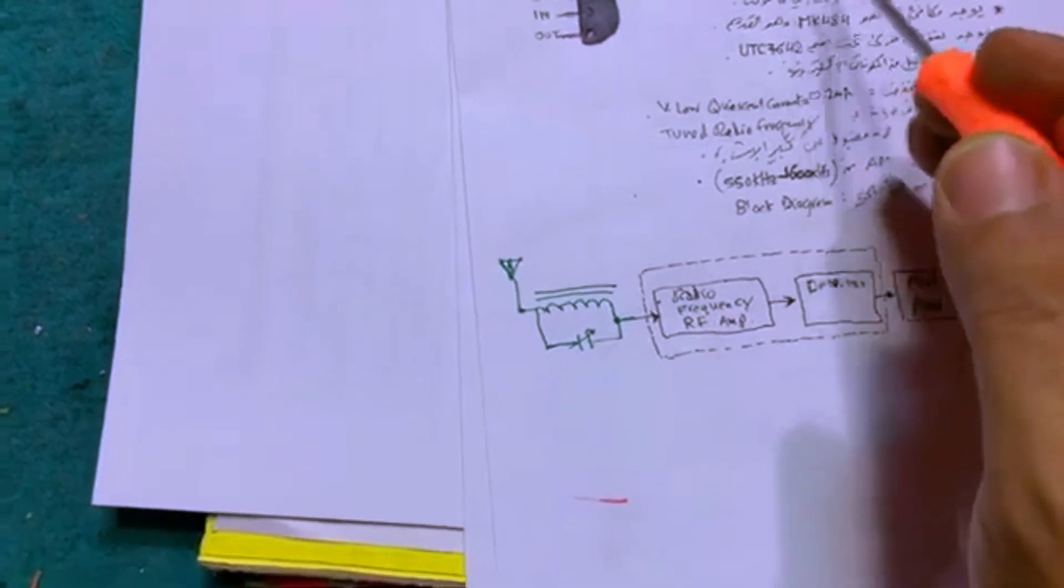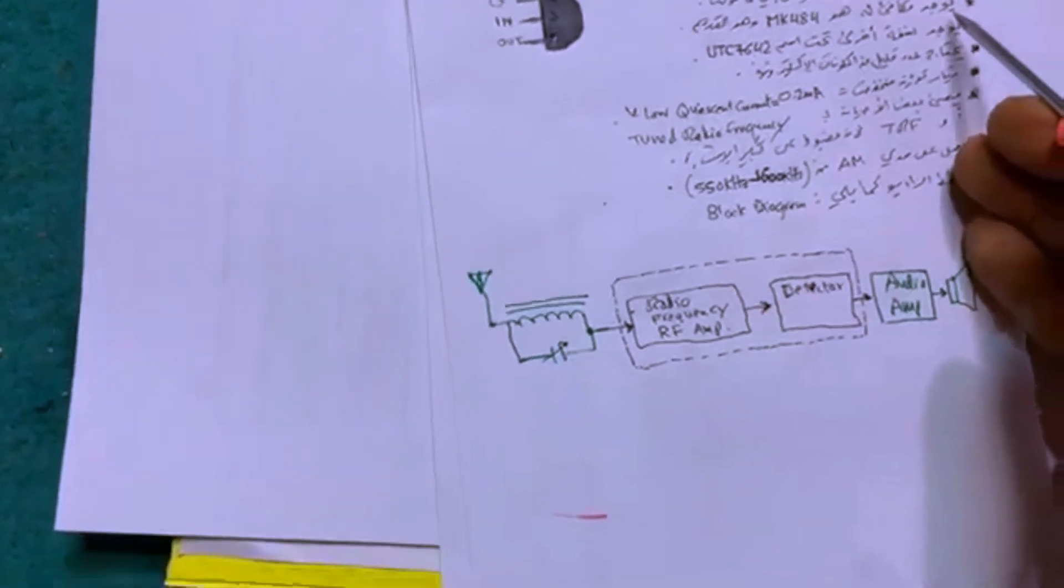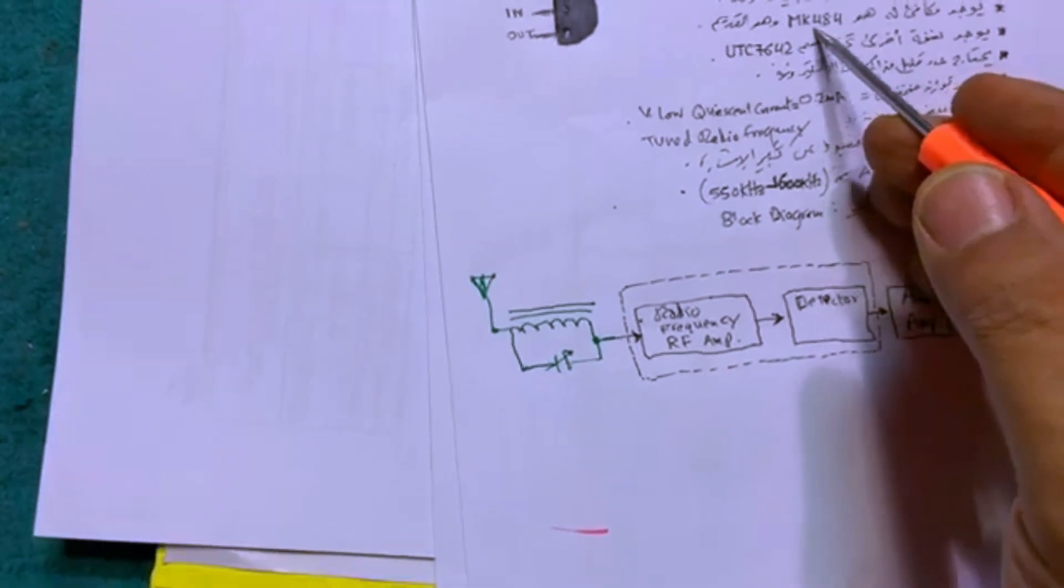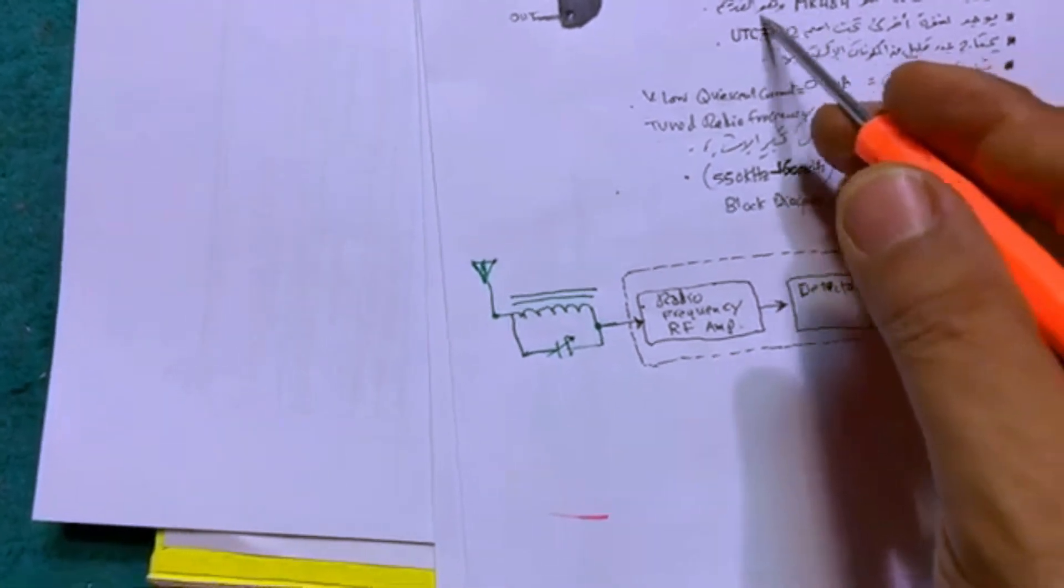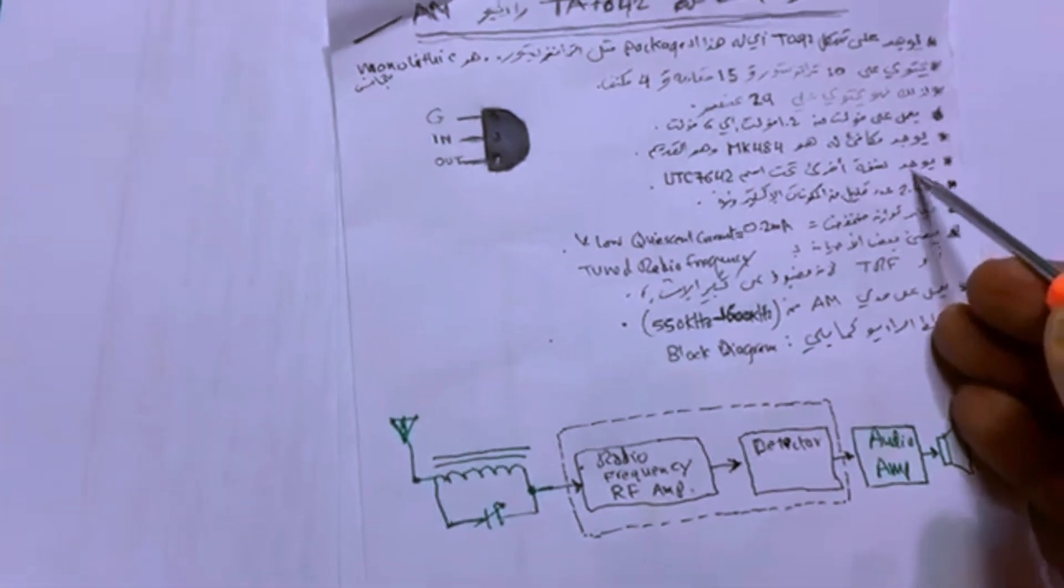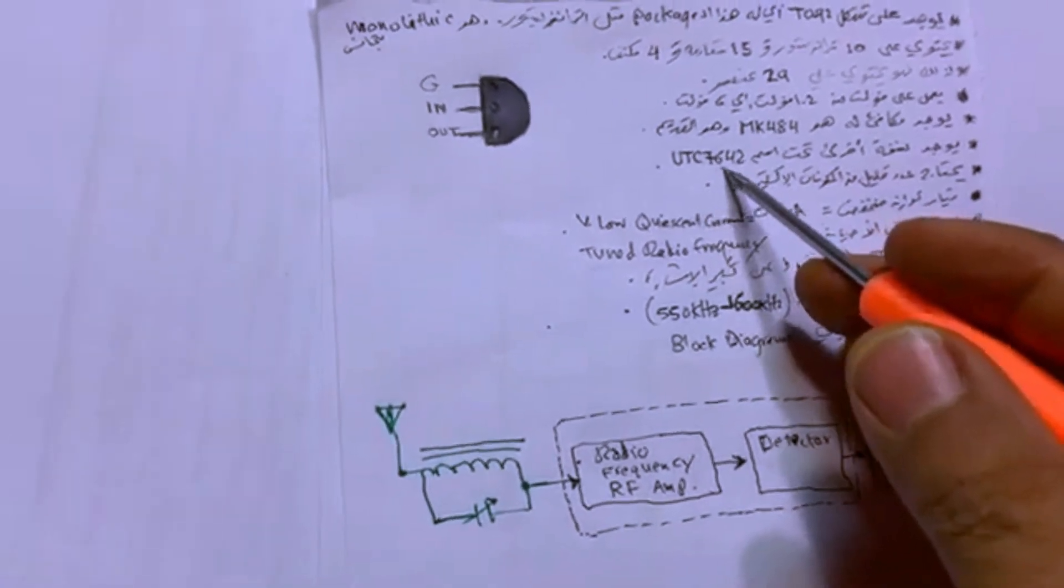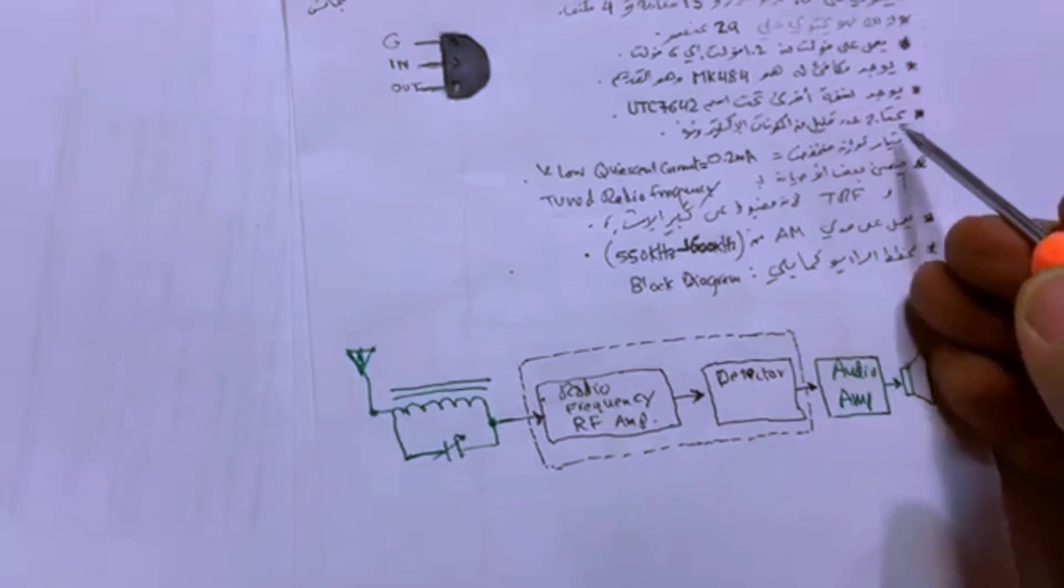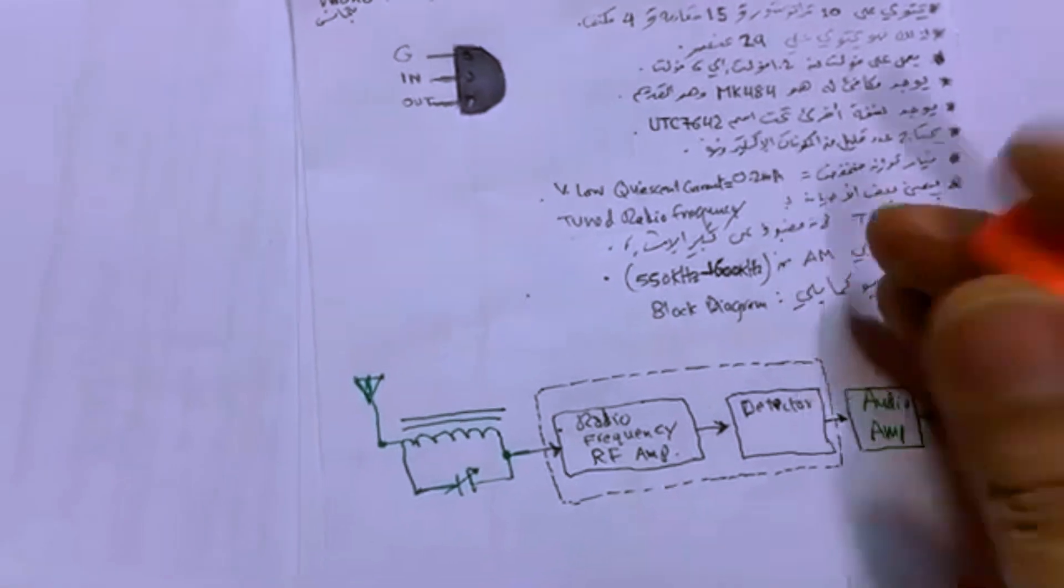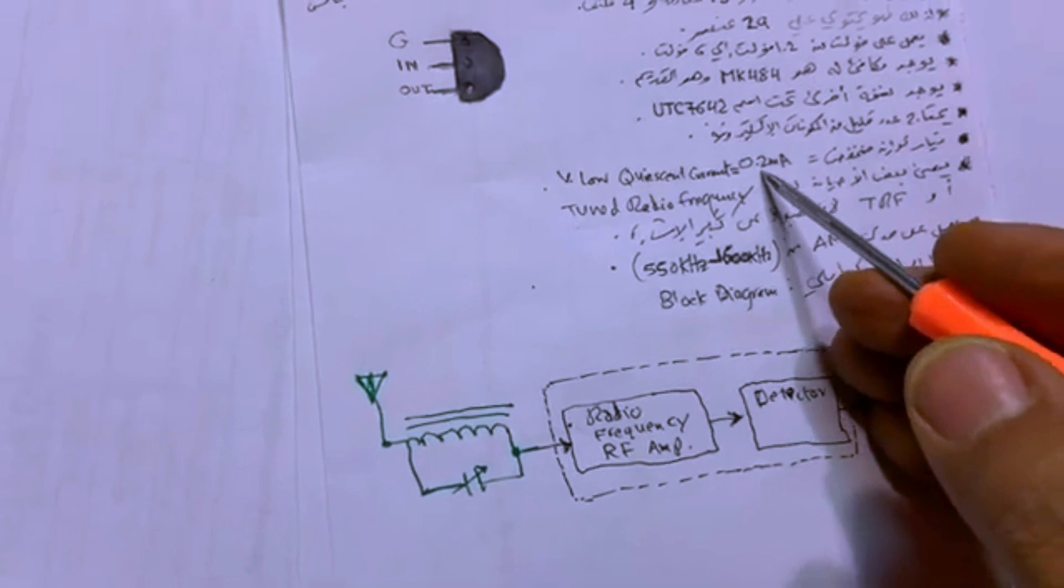There is an equivalent for it called MK484, this is the old one, it's the oldest. There is another copy with another name called UTC7642. It requires the minimum number of electronic components.